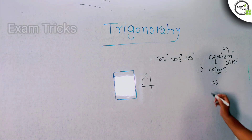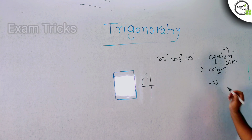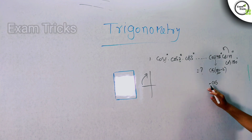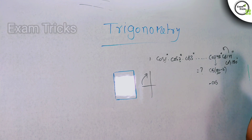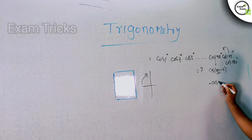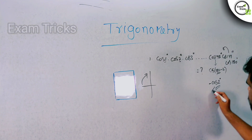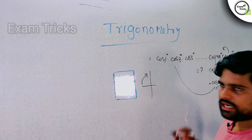So, is cos positive or negative in the 2nd quadrant? Here you can find the sign — it is negative. So cos(180 - 2°) gives us -cos2°, and the 1s cancel.